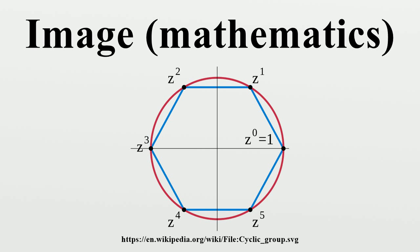Image of a subset: The image of a subset A ⊆ X under f is the subset f(A) ⊆ Y defined by. When there is no risk of confusion, f(A) is simply written as f. This convention is a common one. The intended meaning must be inferred from the context.